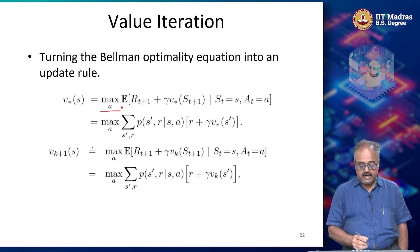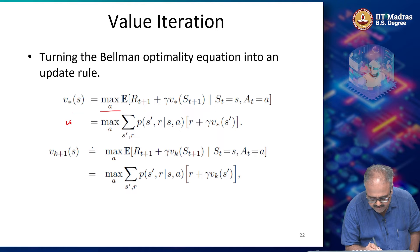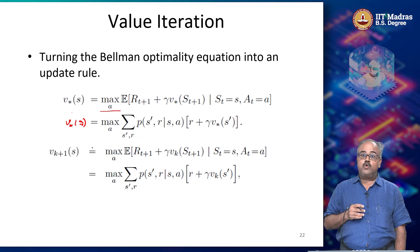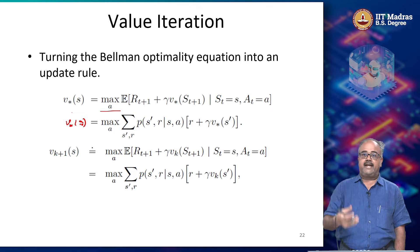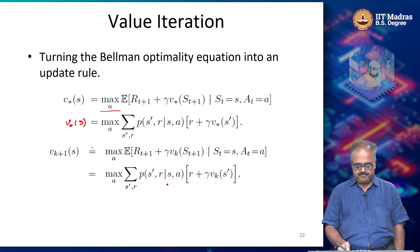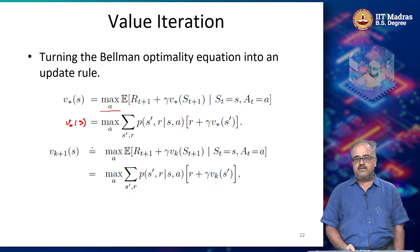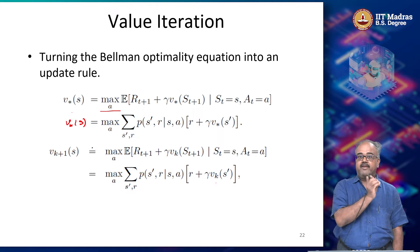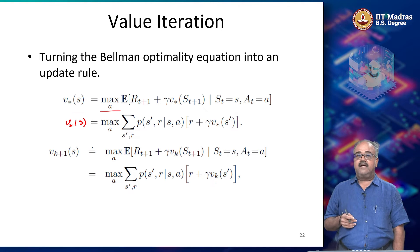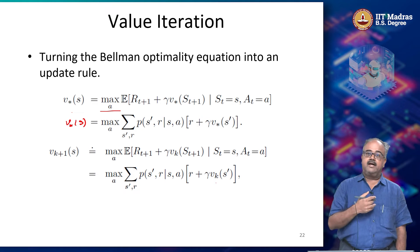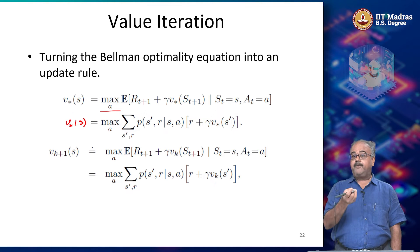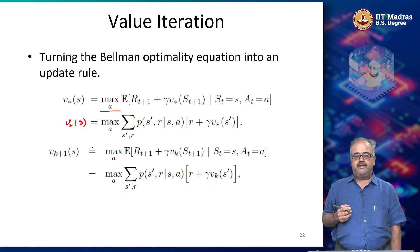One way of handling the non-linearity is to take the Bellman optimality equation, which has V* on both the left-hand side and the right-hand side, and convert that into a backup equation or update rule. We put Vk(s') on the right-hand side and compute Vk+1(s). We keep iterating this until the difference between Vk and Vk+1 is very small. The theory tells us that this will also converge — just like the iterative policy evaluation algorithm converges — and it will converge to the optimal value function if you keep running it to infinity.